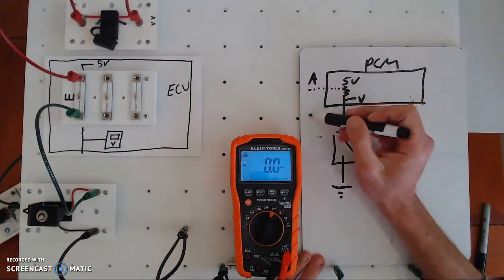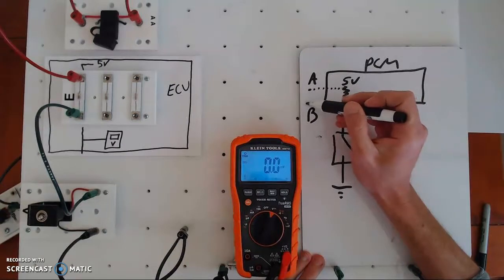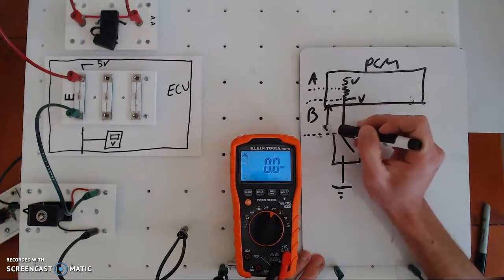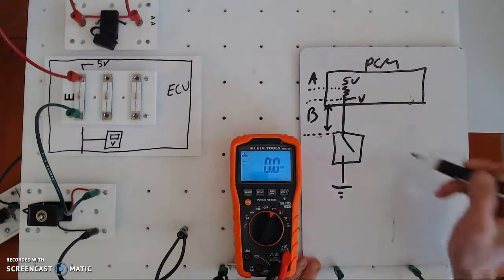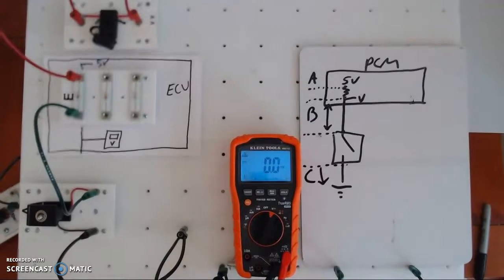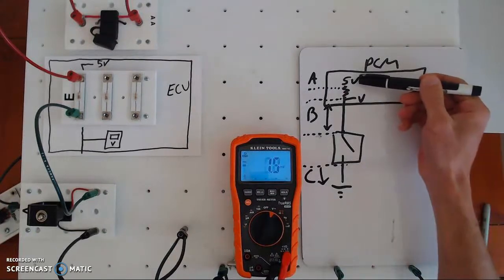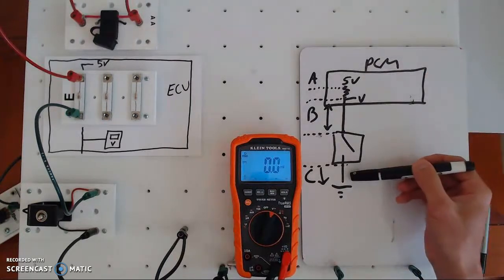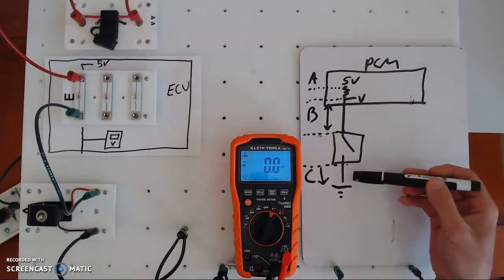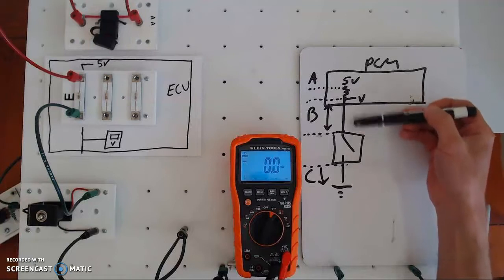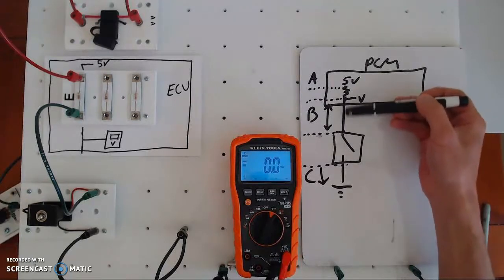Section A is everything above the fixed resistor inside the computer — the PCM. Section B is from the fixed resistor down to the component, in this case the switch. Section C is everything from the switch to ground. As a technician, section A is always 5 volts as long as the internal regulator is working. Section C should always be 0.1 volts or less in a working circuit.